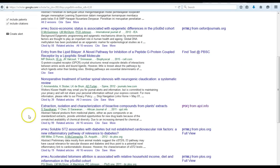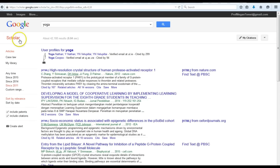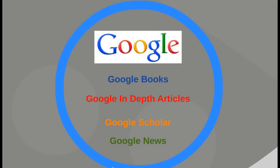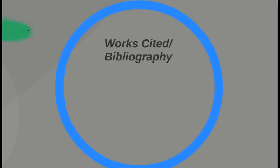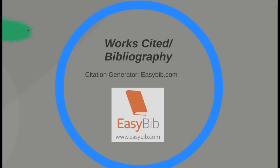So those are the ways in which you can use Google: Google Scholar, News and In-Depth Articles — which varies depending on your browser — and Google Books. Now that I've talked about how to use Google and the databases, let's talk about how you actually cite this information. There are going to be two ways. The first is through a Works Cited or Bibliography page that you'll have to turn in for these speeches.